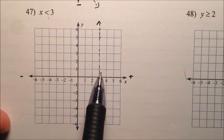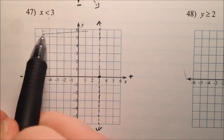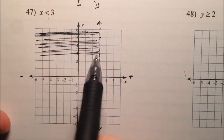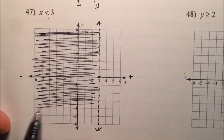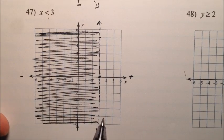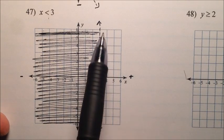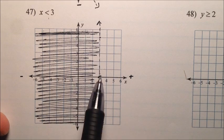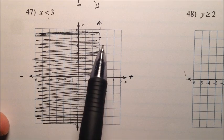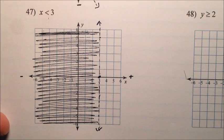We want it less than, so we want it to be less than that. So it's going to be all of this stuff over here that gets shaded. So the answer to number 47 is this dashed vertical line at x equals 3, and we're going to shade everything to the left of it. So there's 47.